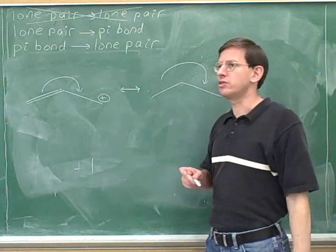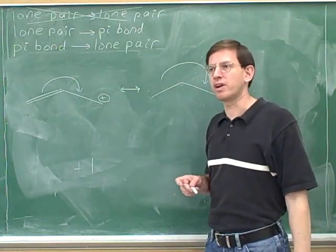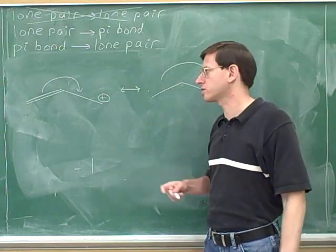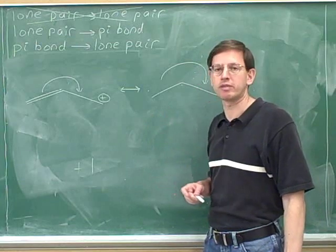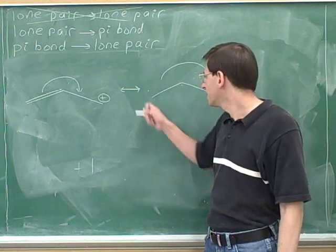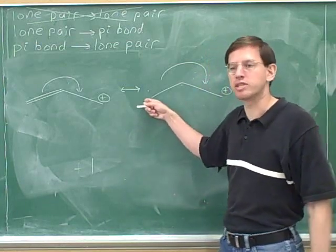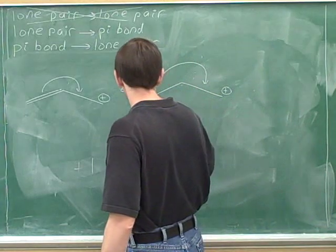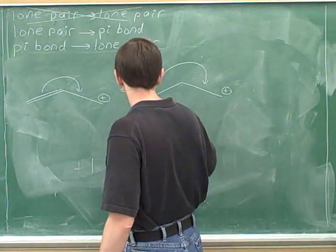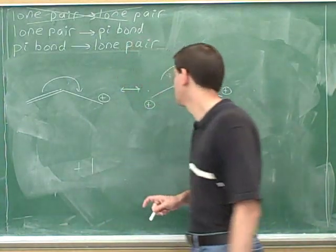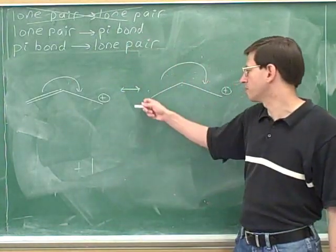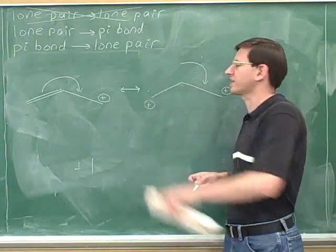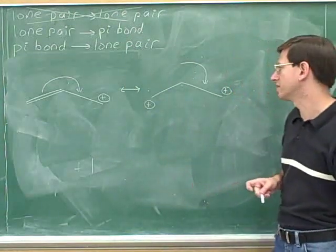As soon as we've figured out where the electrons are coming from, we know who's losing the electrons, so we know who's becoming more positive. This atom lost the pi bond, so it's becoming more positive. So we put a positive formal charge on this carbon. That takes care of the tail of the arrow.